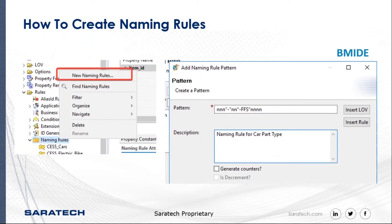How you would create a naming rule in the BMIDE is much like creating a part type. You would go under Extensions, find your naming rules folder, right-click it, and create a new naming rule. There's a pattern that you have to list, and this can be structured in very many different ways — you can have counters mixed in with different characters, strings, and all different types of symbols, really whatever fits your need. It's not intelligent in the sense of pulling from a dropdown of different facilities, but you can search on these naming rules just as easily, and they're very easy to configure.